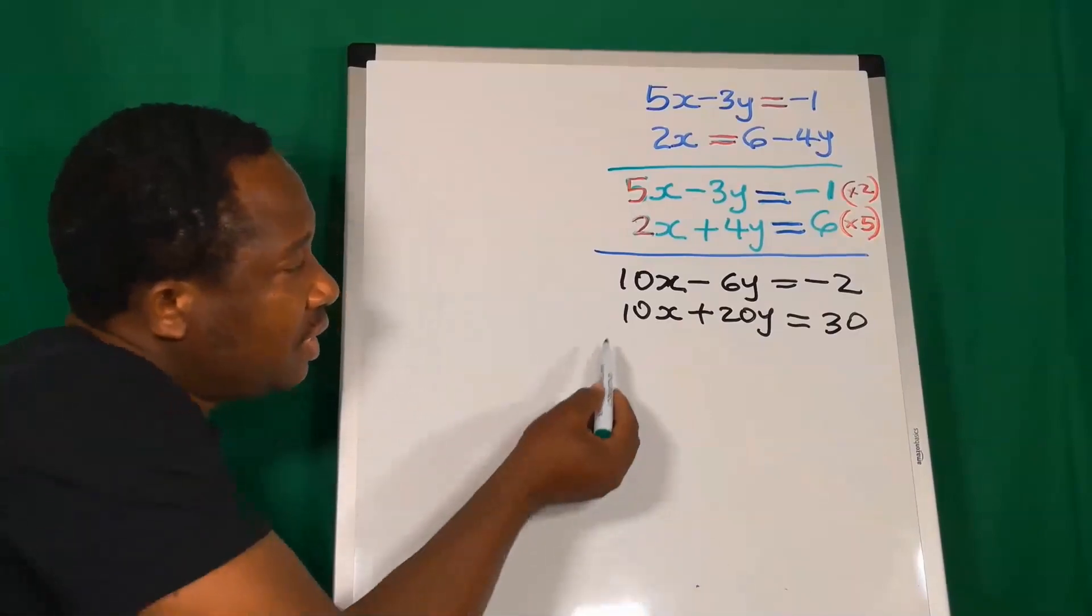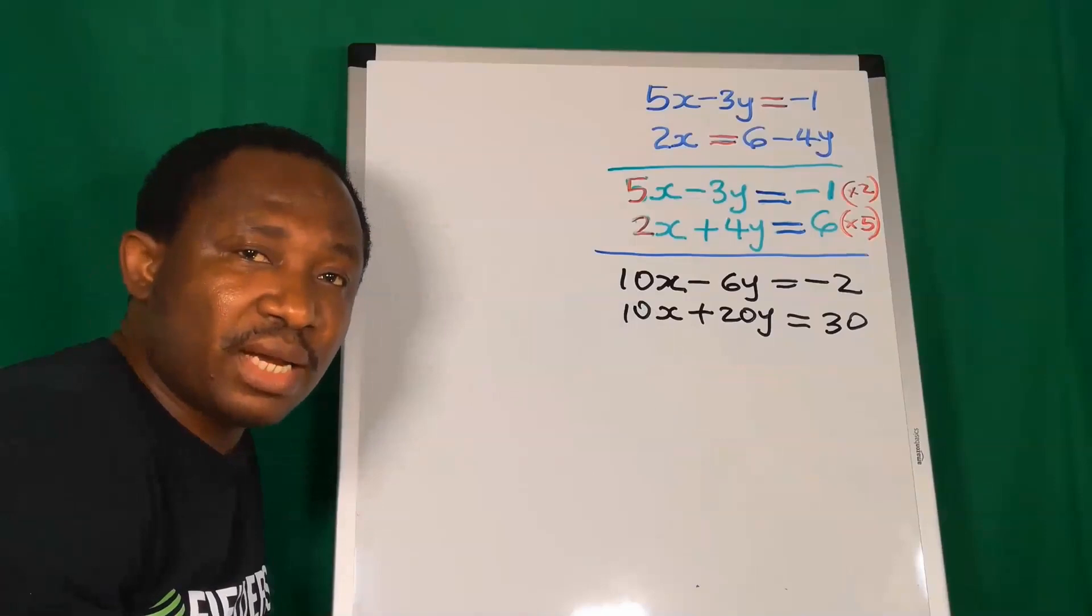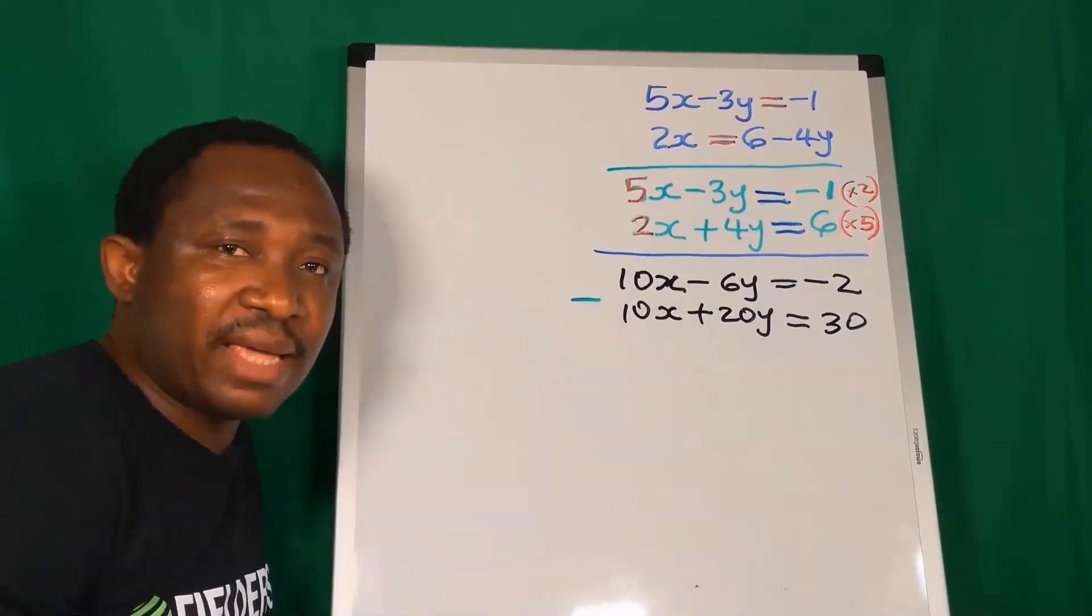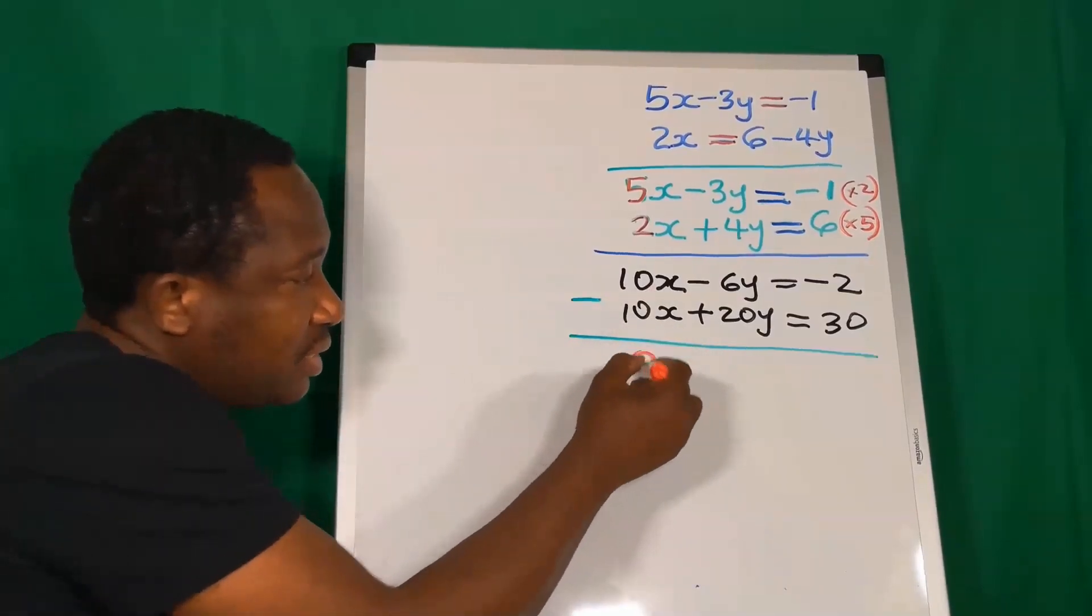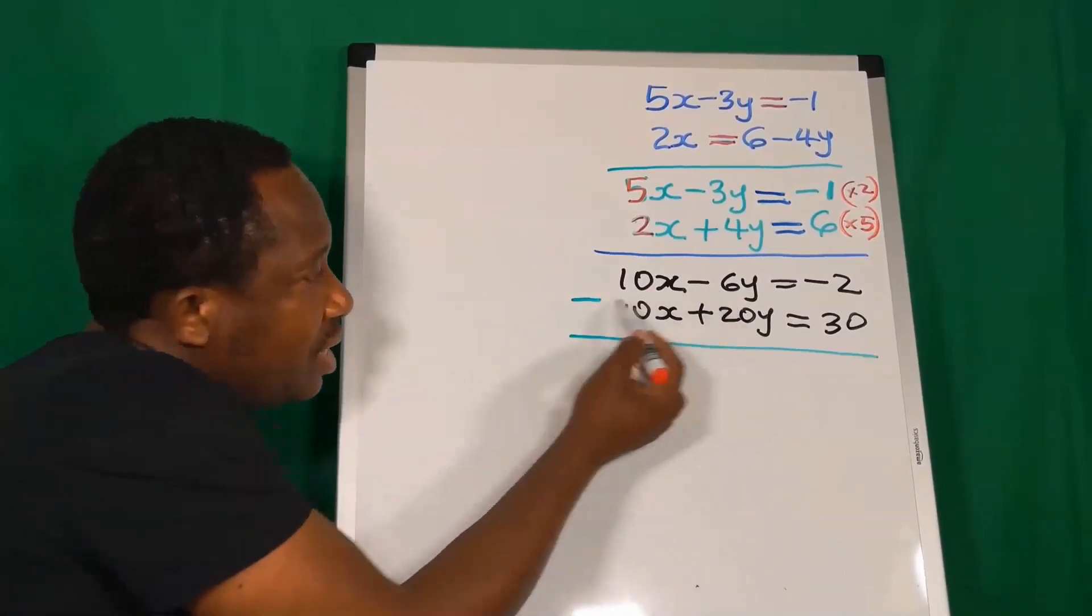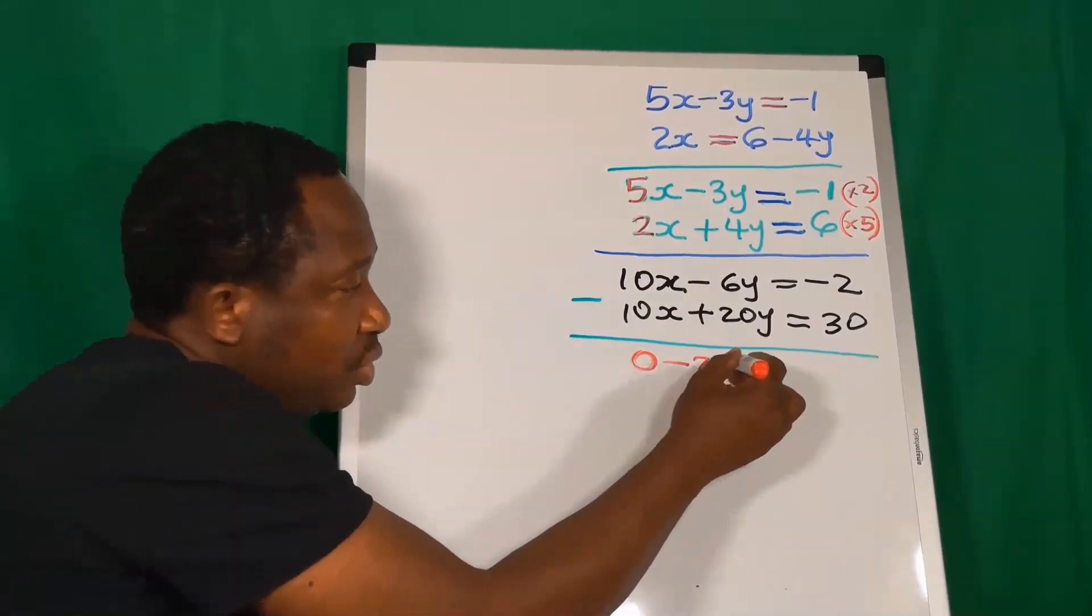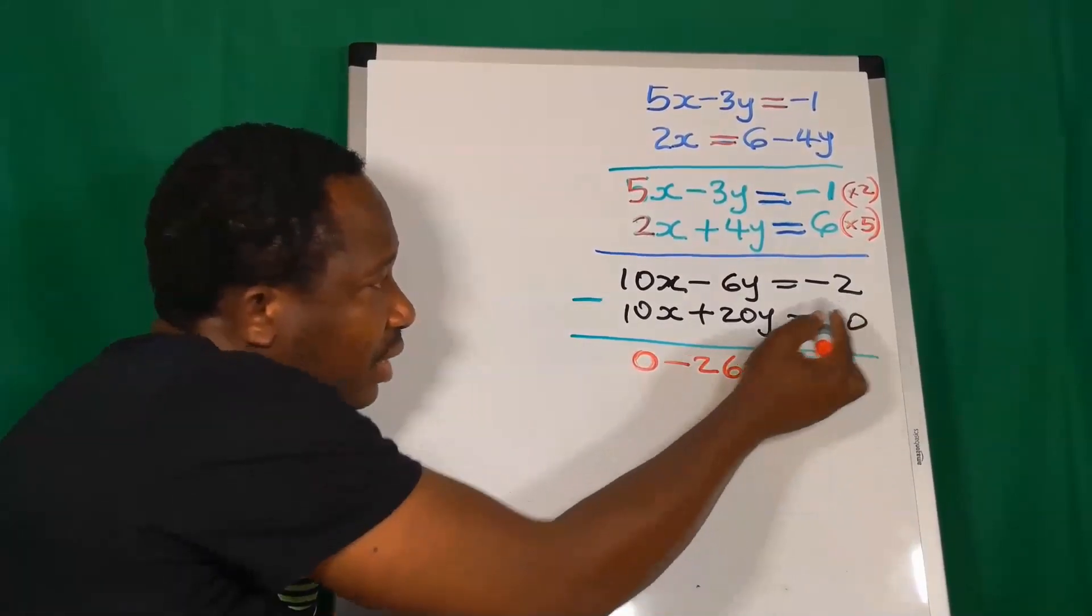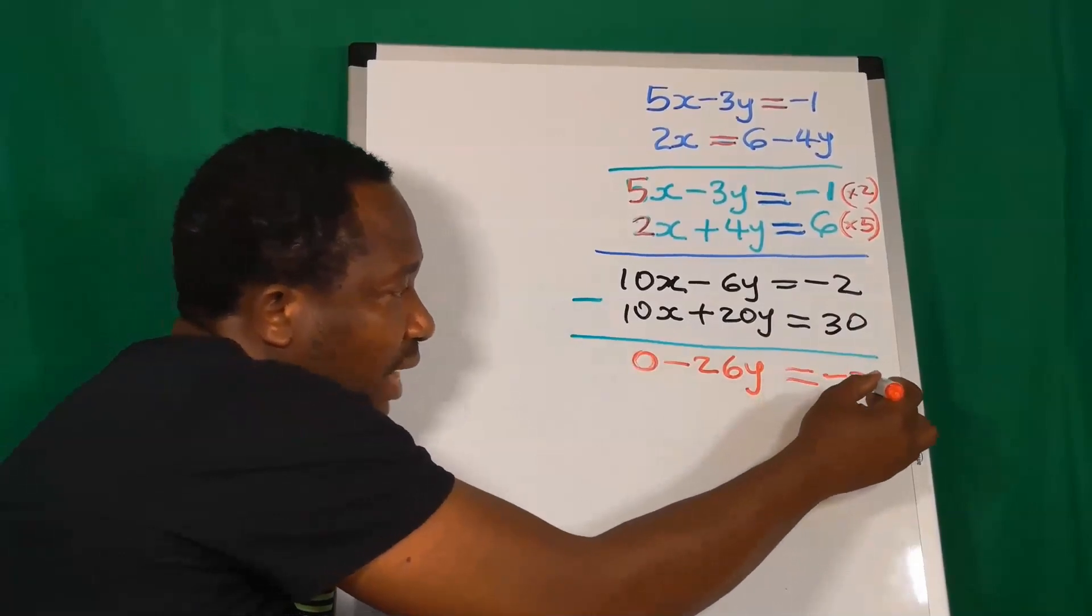You can see that the coefficients of x in equation 1 and 2 are now the same. Hence, we're going to subtract by elimination. 10x minus 10x is 0. Minus 6 minus 20, you're going to have minus 26y. On the other side, minus 2 minus 30 will give you minus 32.